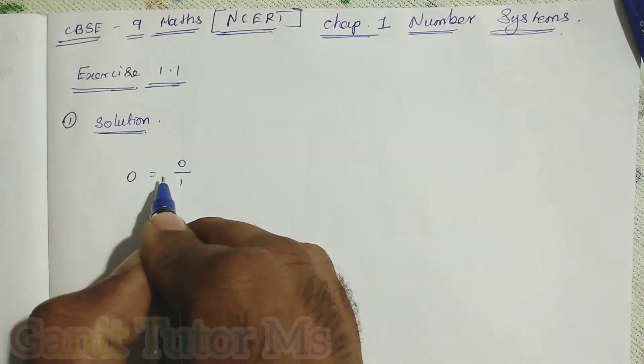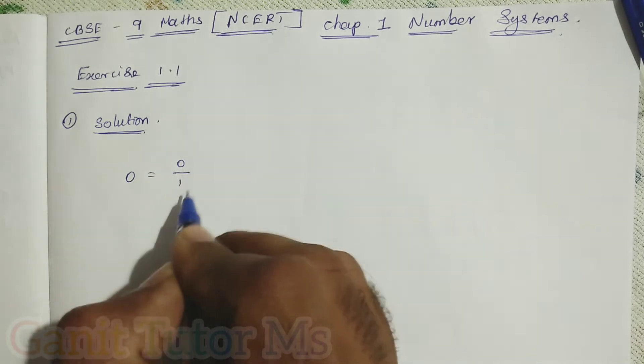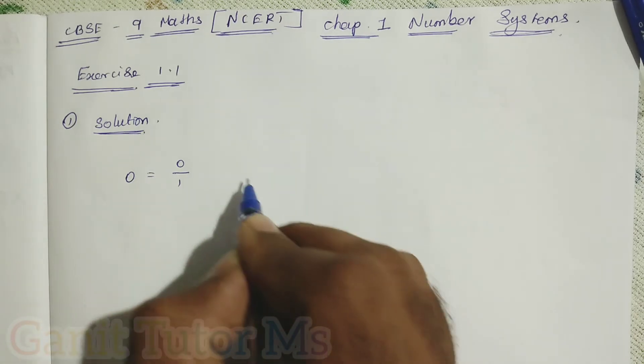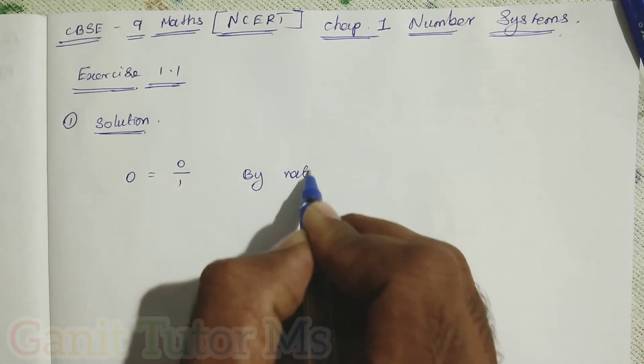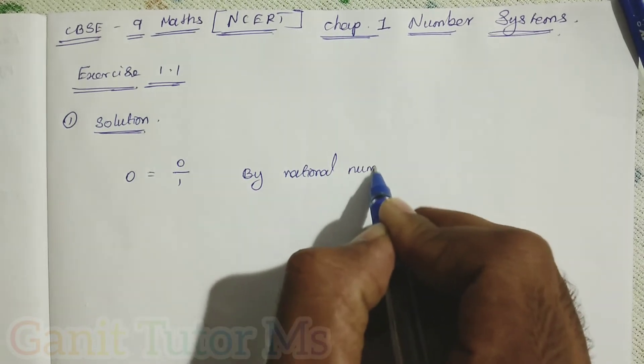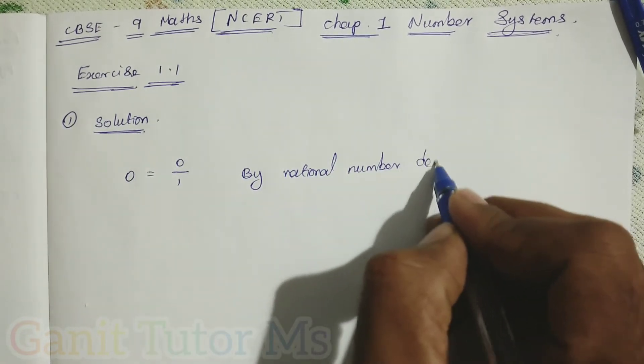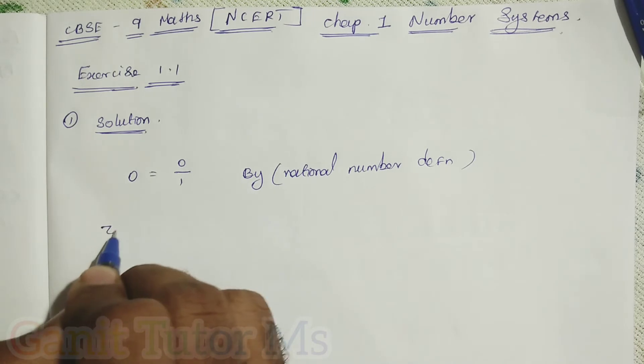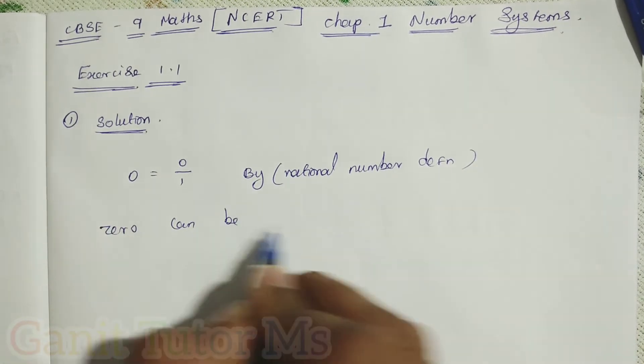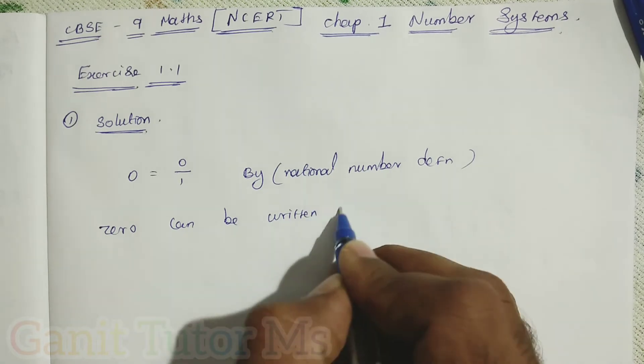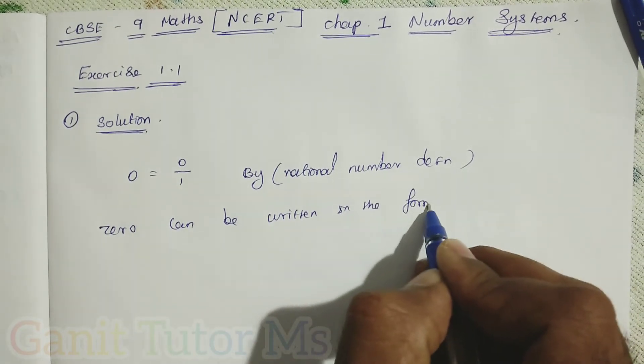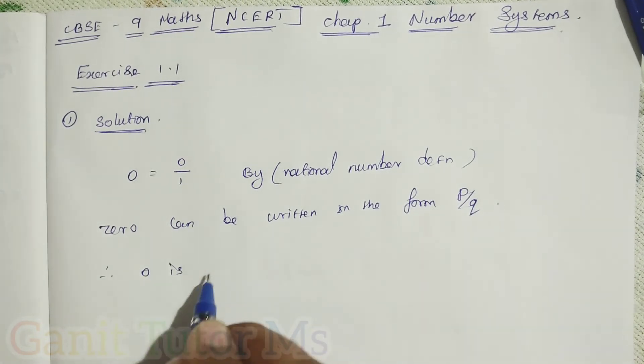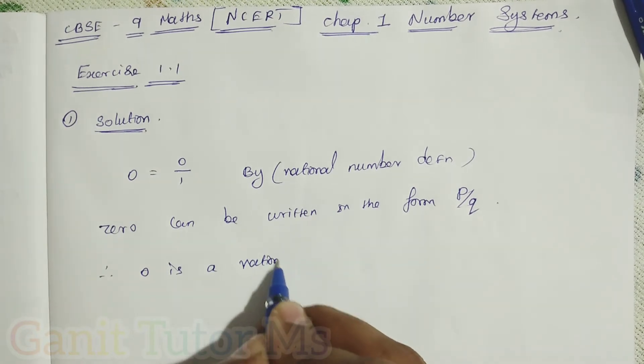Now, 0 is p and q is 1. So 0 is also an integer, 1 is also an integer. By the definition of rational numbers, it is in a p by q form. So 0 can be written in the form p by q. Therefore, 0 is a rational number.